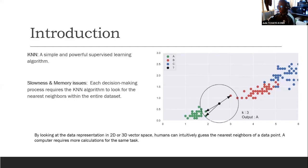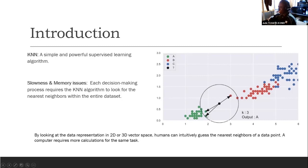K-nearest neighbor is a simple and powerful supervised learning algorithm. As shown in this picture, imagine that we have a dataset of three categories. To select the k-nearest neighbor, first we have to compute the distance from our new data point to all the data points, and after we can look at the distances and see what our nearest neighbors are. To classify this new query point, we just look at the category of the selected nearest neighbors and make a voting system in order to make a decision on a new category.